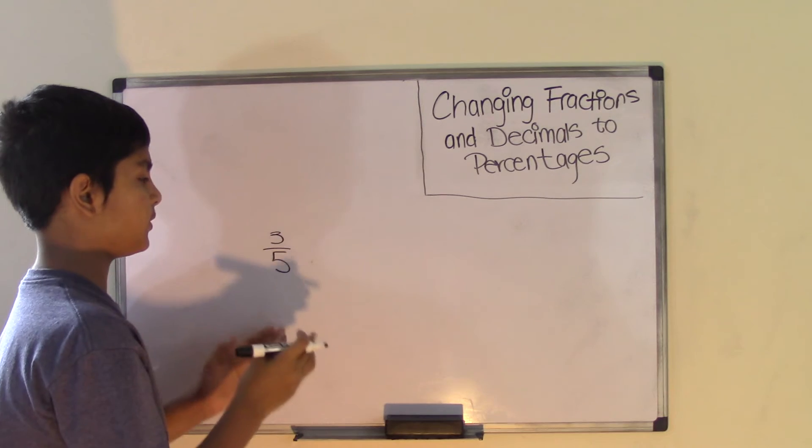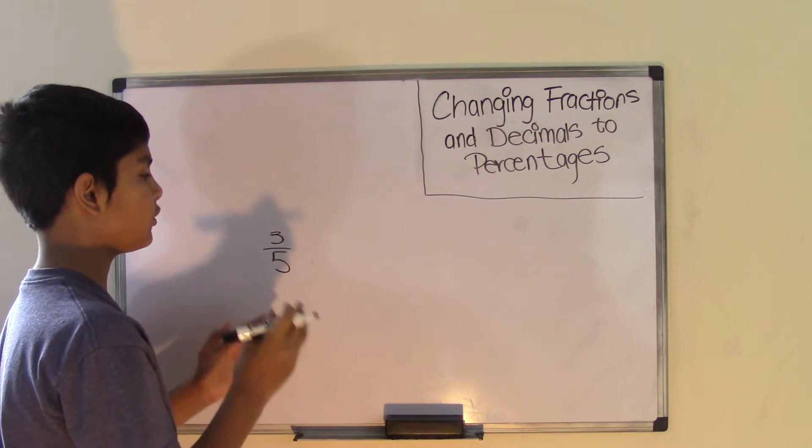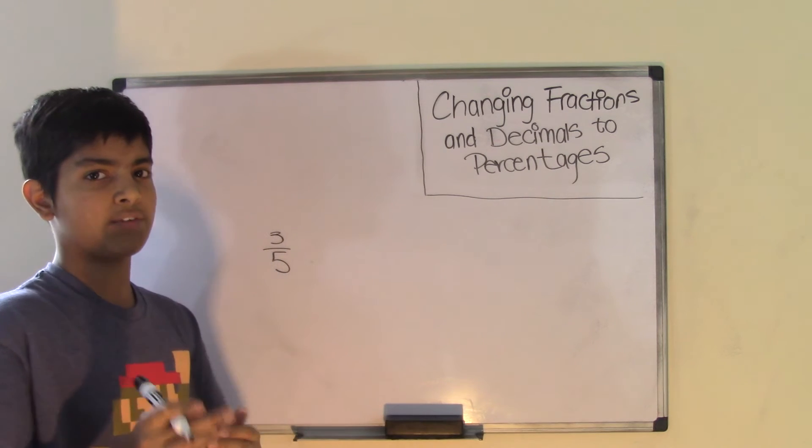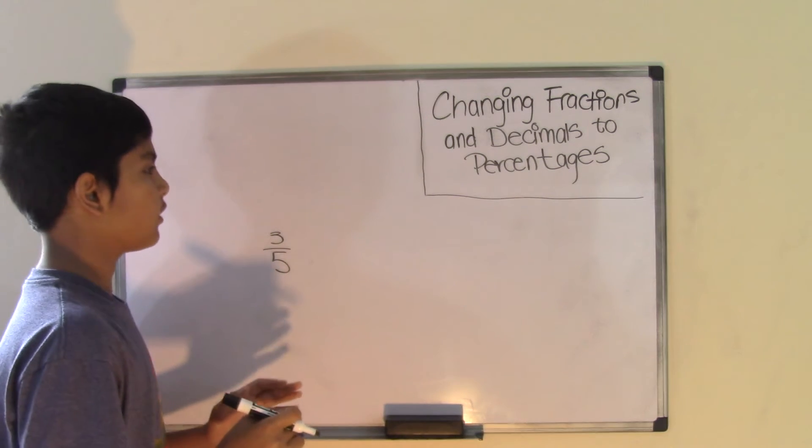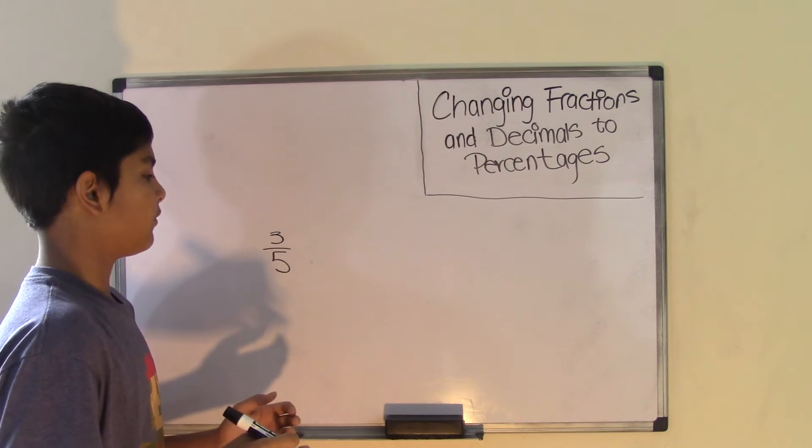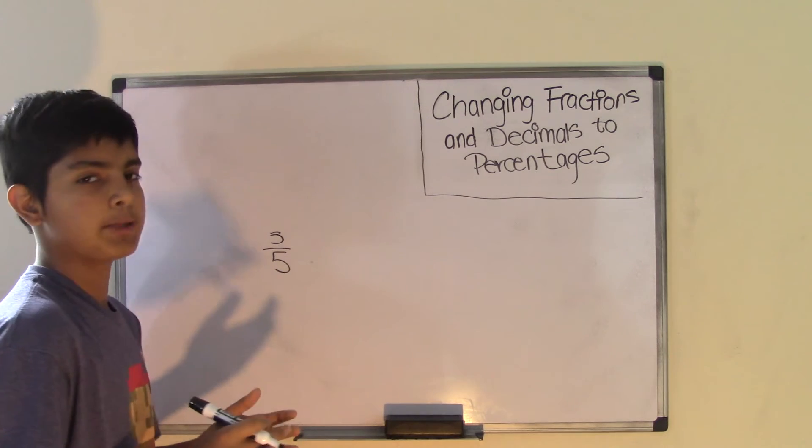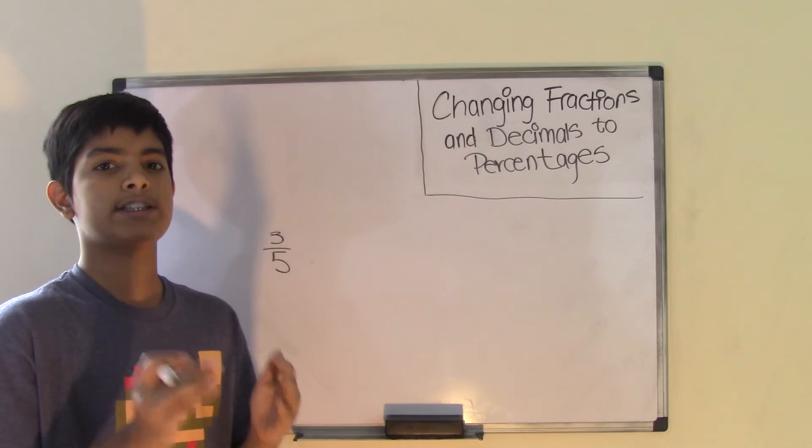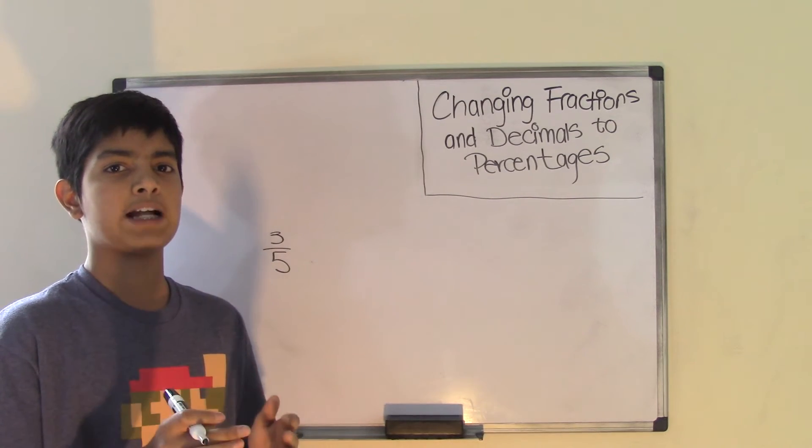So what 3 over 5 really means is that it has 3 parts out of 5 wholes. Out of a whole which has 5 parts. So now to change this into a percent, we first have to make the denominator into 100, because anything out of 100 is going to be that percent.